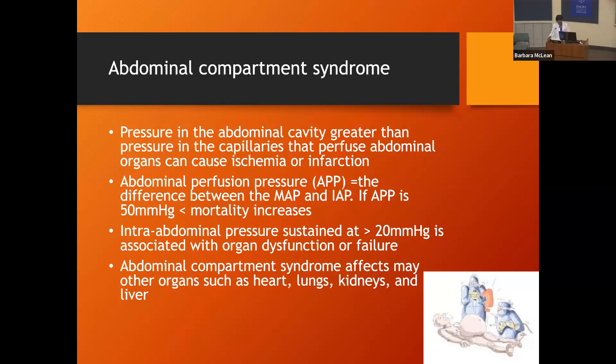Intra-abdominal pressure sustained at greater than 20 mmHg is associated with organ dysfunction or failure. When patients become septic, they can go into multi-system organ failure and the abdomen starts to shut down. You start to lose blood flow to the abdomen. Compartment syndrome not only affects the abdomen — it will also affect other nearby organs.